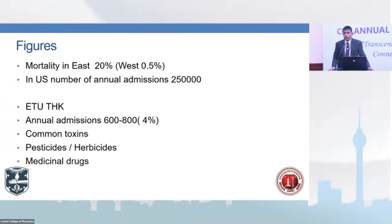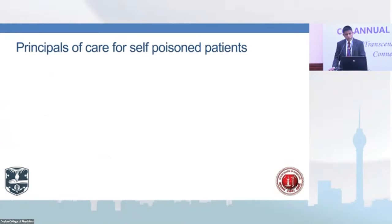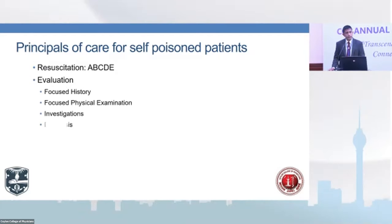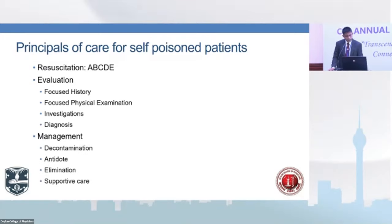In the US, annual admissions due to poisoning are about 250,000 per year. In Karapitia, we get around 600 to 800 admissions due to poisons, which is 4% of total admissions. Common Toxidromes we encounter are pesticides, herbicides, and medicinal drugs. The principles of management of any poison patient are: first resuscitate if physiologically unstable, then evaluate by focused history, physical examination, and investigation, and then manage — principally decontamination, antidote, elimination, and supportive care.